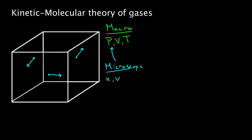In this video, we want to figure out the relationship between microscopic and macroscopic properties — for instance, if I knew the speed of all these molecules, how could I figure out the pressure, or vice versa? But first we need a few assumptions: the molecules don't really interact except through collisions, and any collision — between molecules or with the container wall — must be elastic, conserving both kinetic energy and momentum.